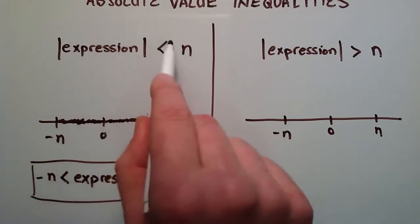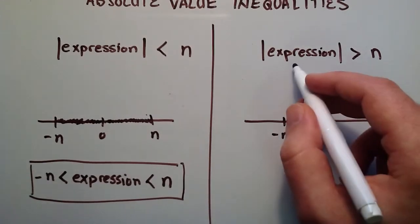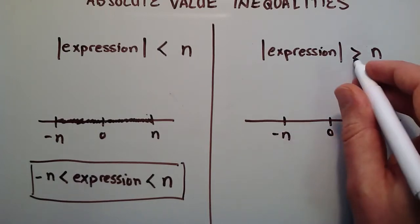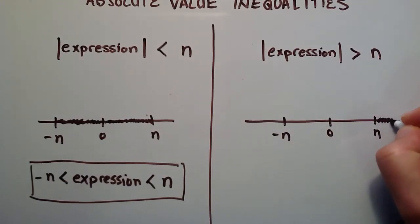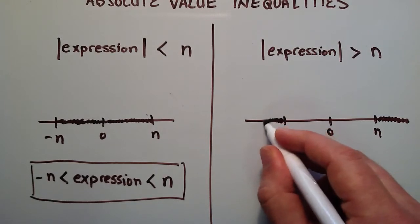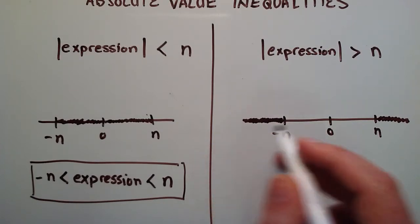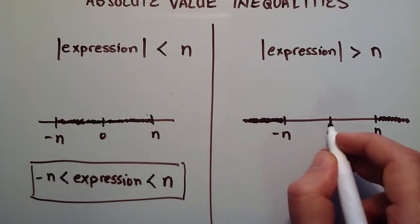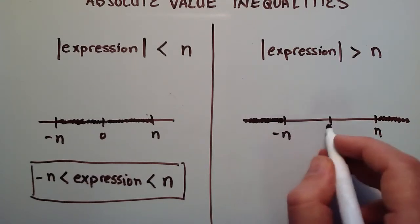If we see a less than sign in our absolute value inequality, we know we'll get that type of solution. For the greater-than case, we're looking for distances from 0 that are greater than n — that's everything beyond n on the positive side, and also everything beyond n in the negative direction, which means all values less than negative n. Note that even going to a negative point, the distance itself is still positive.